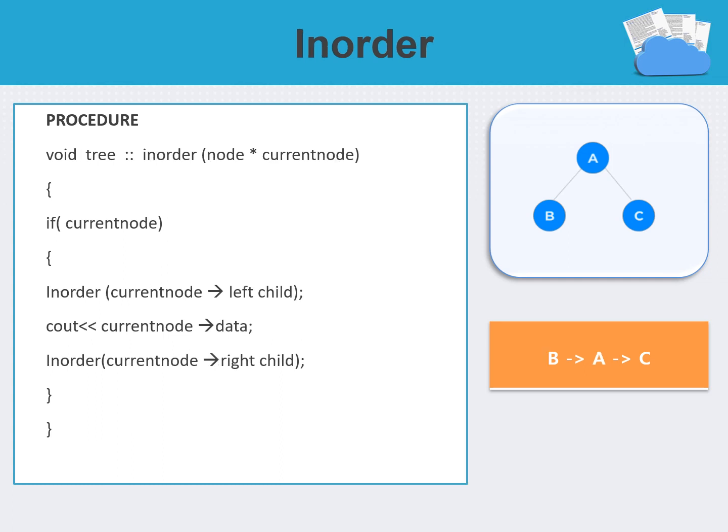Let us explore in-order traversal for a binary tree. It is similar to pre-order traversal except the order of the visit. In this procedure, we traverse the tree in in-order fashion — visiting the left subtree first, then the current node, and finally the right subtree, as shown in the procedure. Taking the same example, the order of the visit will be B, A, C: B is the left child, A is the current root node, and C is the right child.